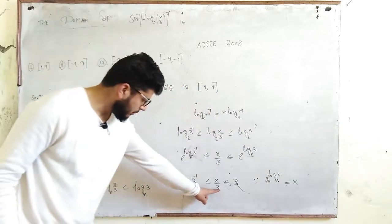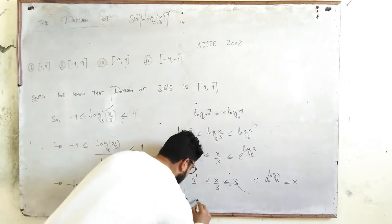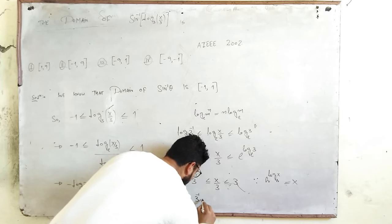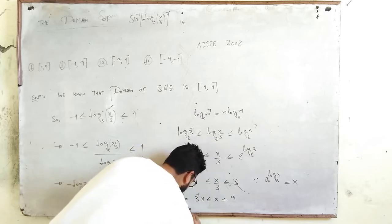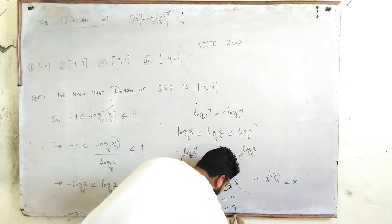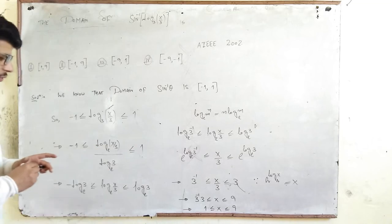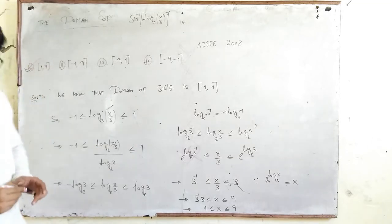Then you multiply by 3 throughout, so we are left with 3⁻¹ × 3 ≤ x ≤ 9. That means x lies in the closed interval [1, 9]. So option 1 is correct. Thank you.